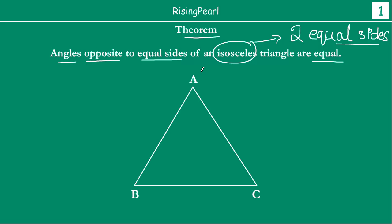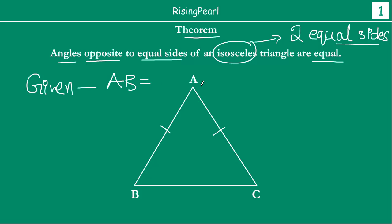We have drawn a triangle A, B, C such that AB is equal to AC. So it is given that side AB is equal to side AC.